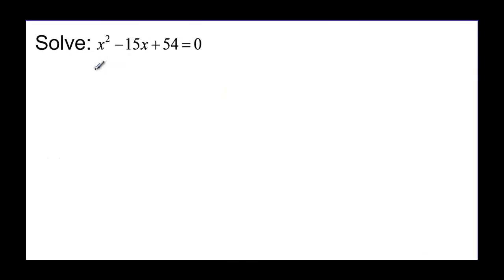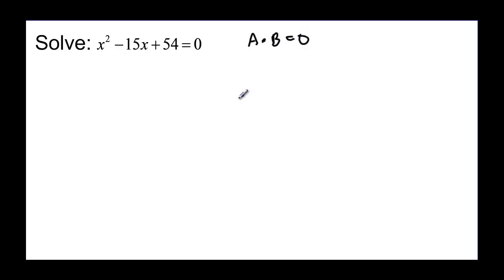So what happens if we don't have factors? If we don't have factors, we need to factor, because the property said a times b — it didn't say plus. There was no addition or subtraction in there to give me terms. So we need to factor this.